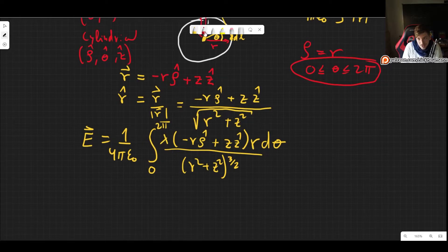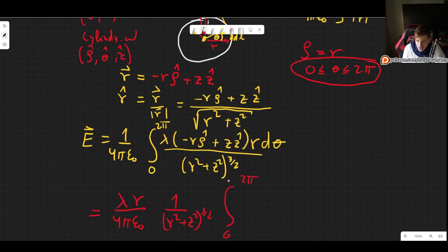Once we want to do this integral, we can pull out quite a few things. This doesn't depend on θ, so we can take out λr and 4πε₀. We can take out the (r² + z²)^(3/2) term which makes it quite nice. Then we have integral between 0 and 2π of minus r ρ-hat dθ, plus the integral between 0 and 2π of z z-hat dθ.